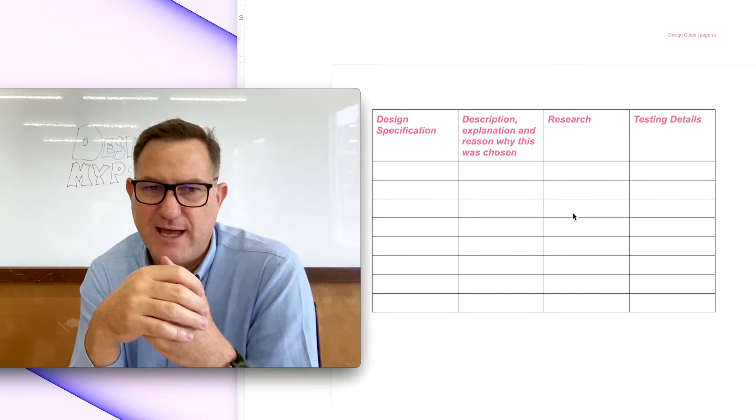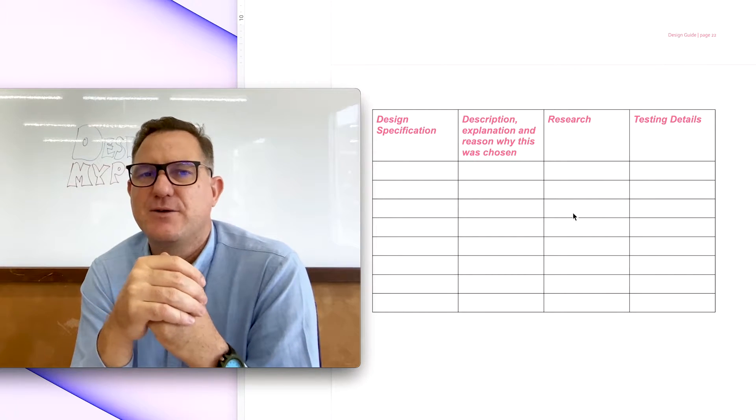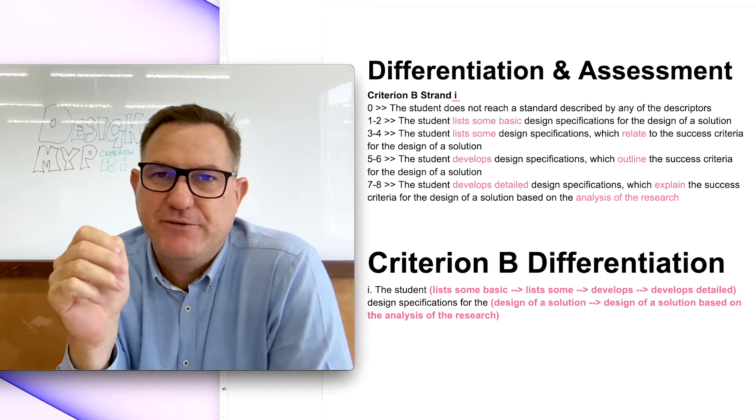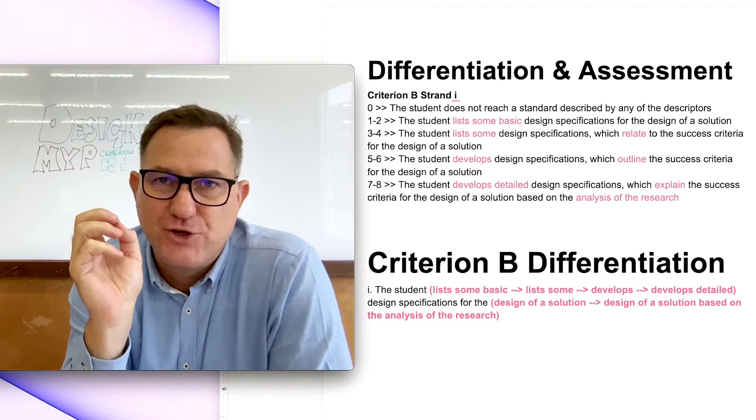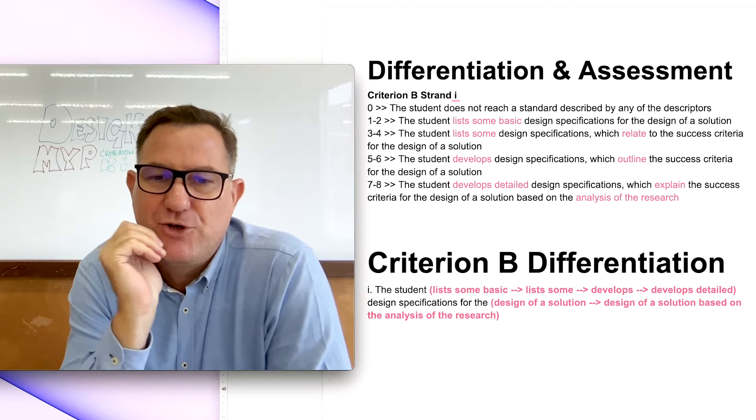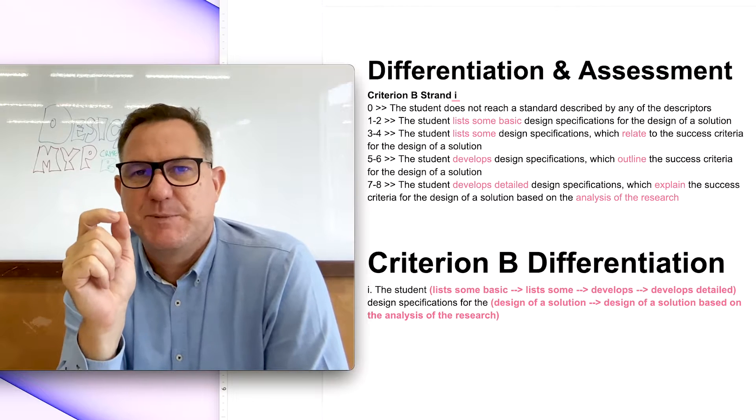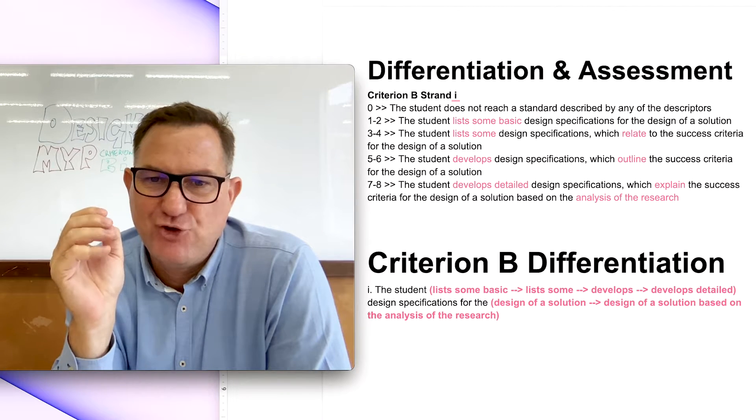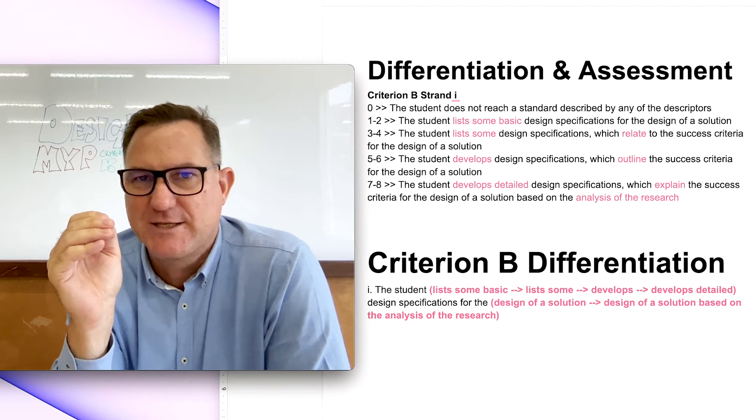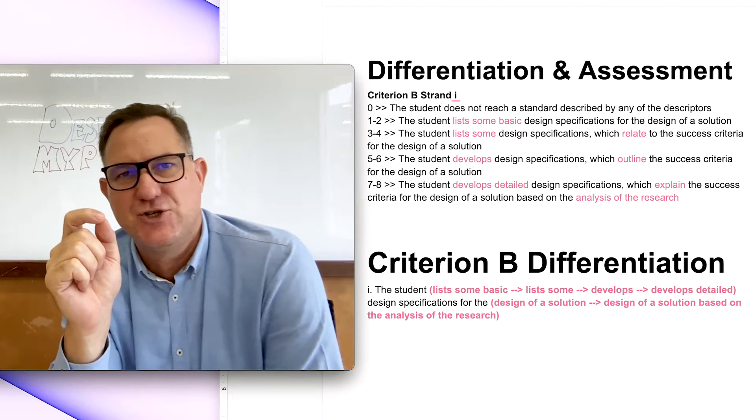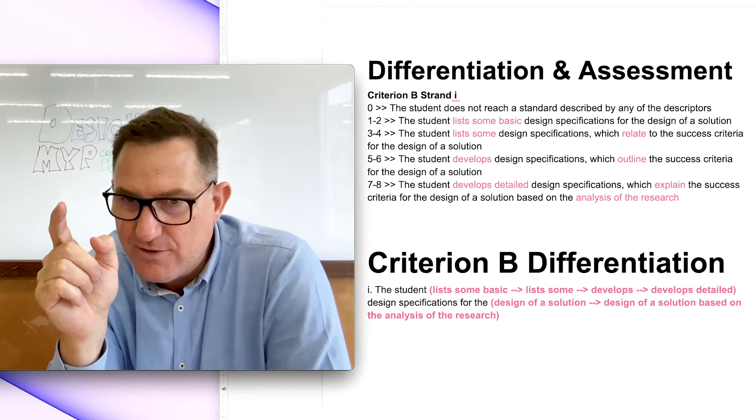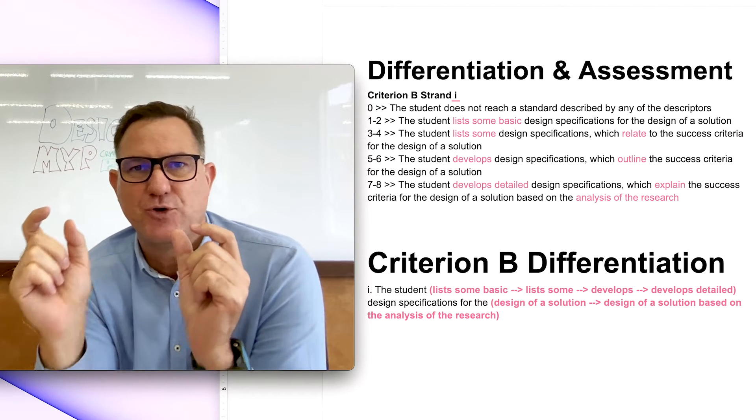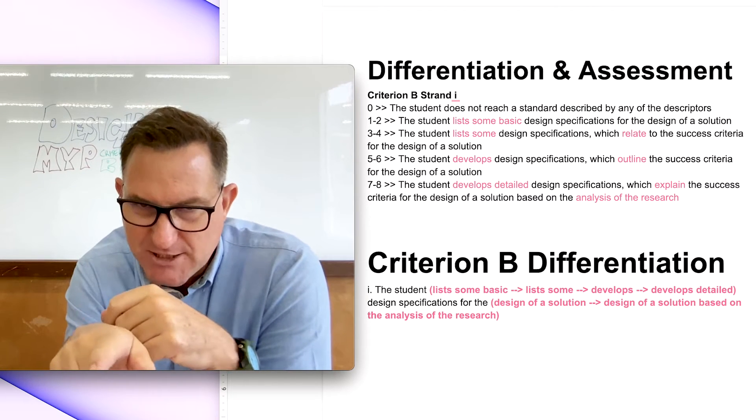So that's a neat little snapshot of how to get top marks for strand one criterion B. Actually, before I sign off, I just want to share with you about the assessment criteria and the mark scheme and how this is going to be graded. So you're clear on what you're aiming for as a student. So when you're preparing your documents. So first of all, when it comes to the design specifications, if you list some basic design specifications, the maximum score you're going to get is two. But if you develop these, you're going to get a score of six. That's the maximum score. But if you develop detailed design specification, that's when you're going to get your score of eight.